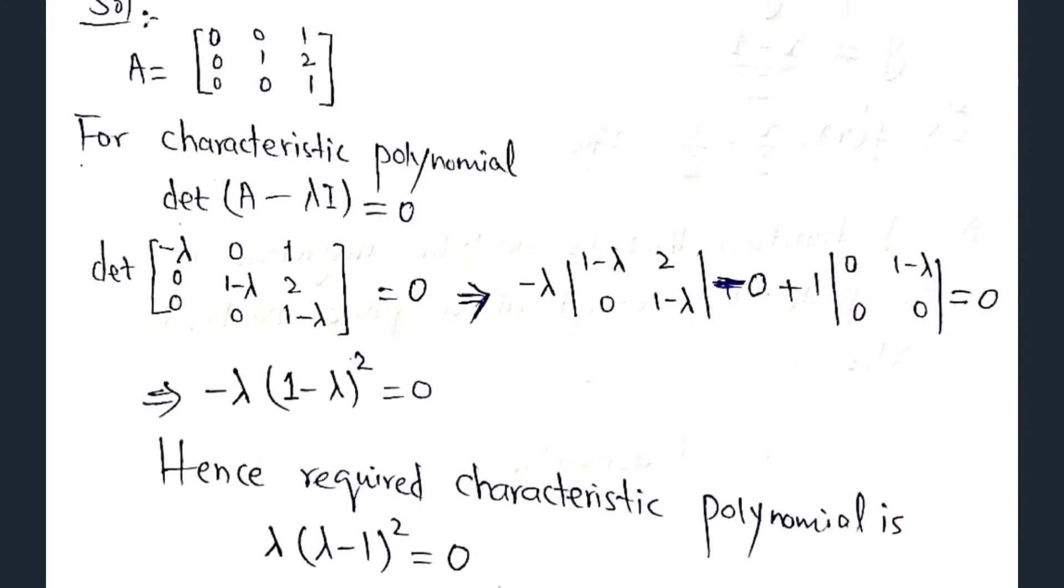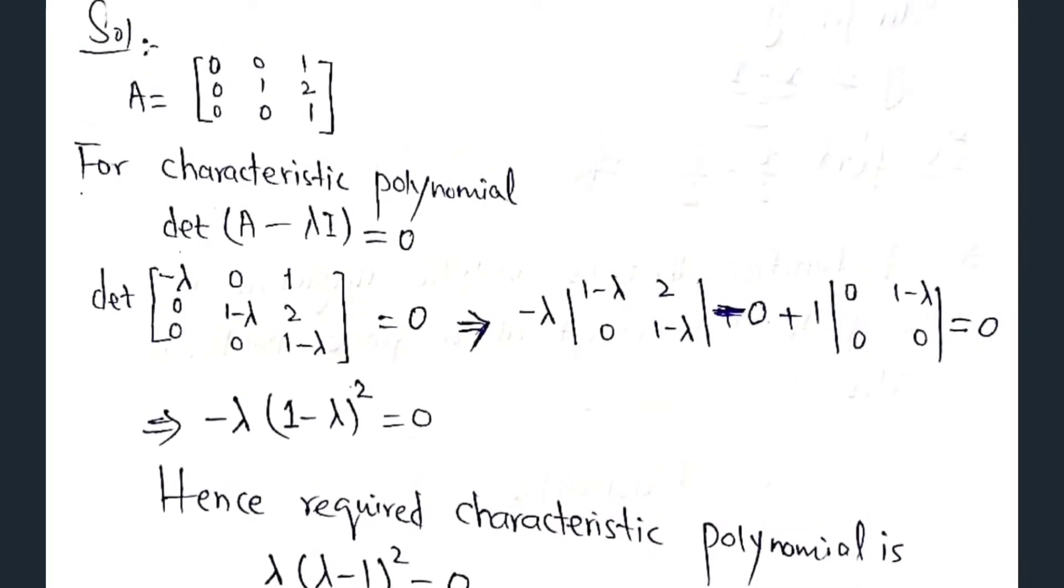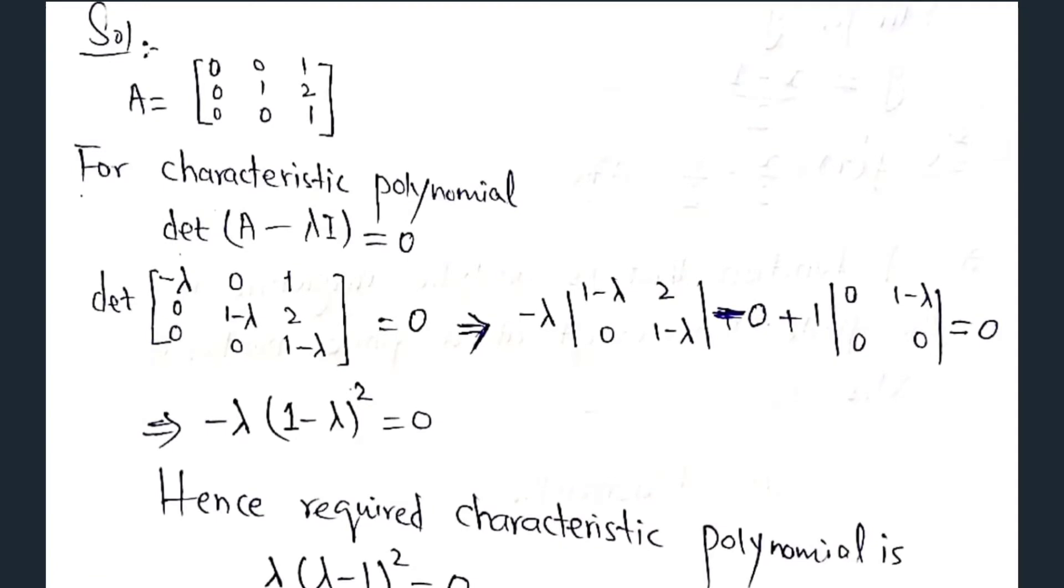The next is, for the given matrix A, we have to find the characteristic polynomial. After taking the determinant of A minus lambda I equals 0, we get the required characteristic polynomial is lambda into lambda minus 1 whole square.